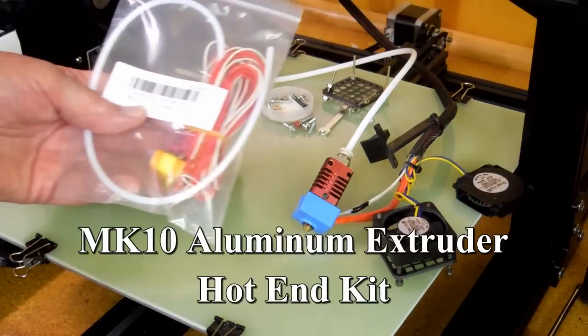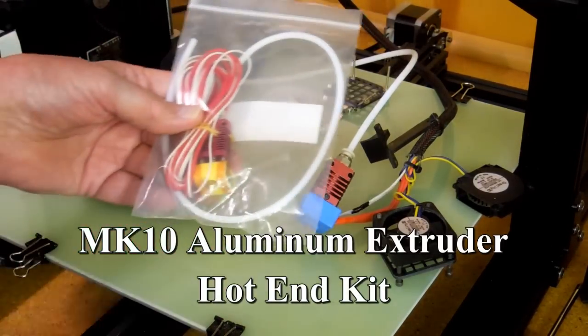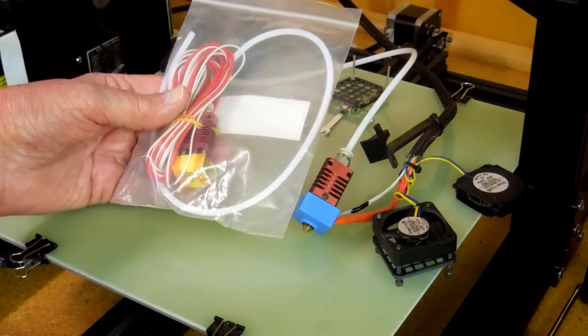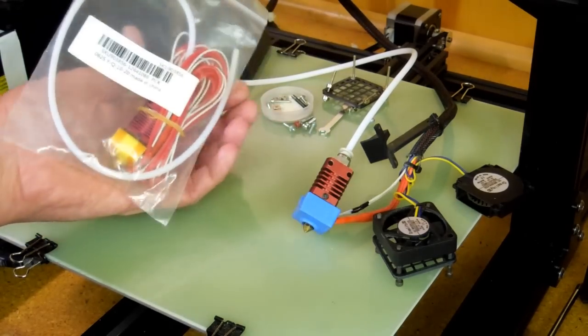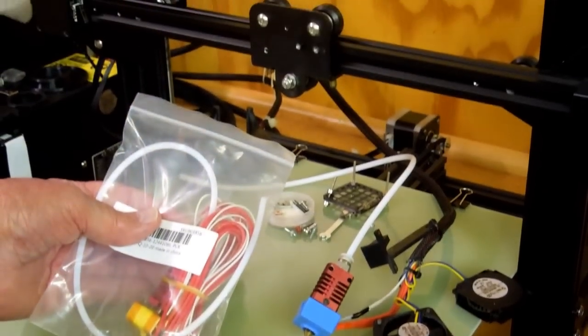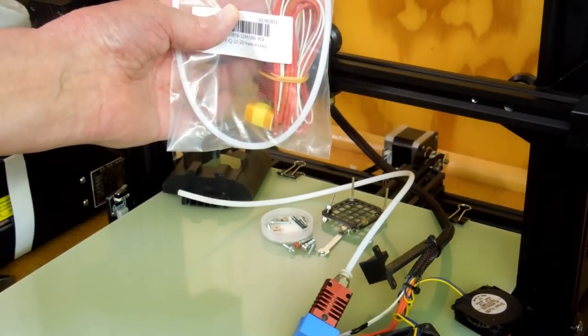One other alternative is to buy a complete replacement hot end unit. This is the hot end, the thermistor, the heating element, and it's ready to bolt on here.